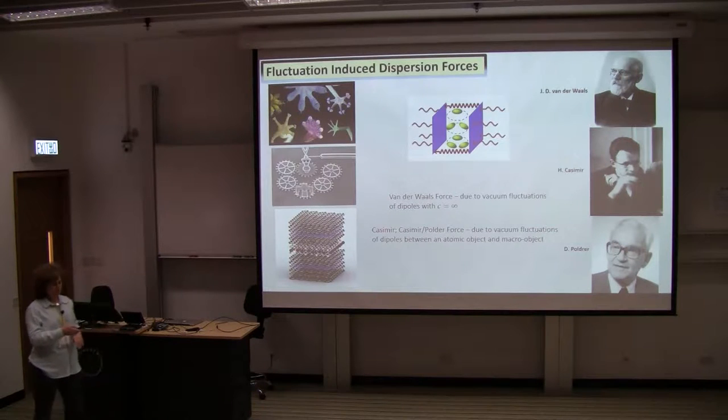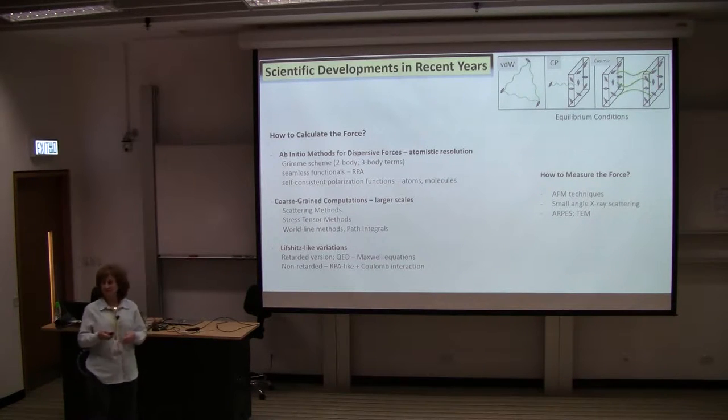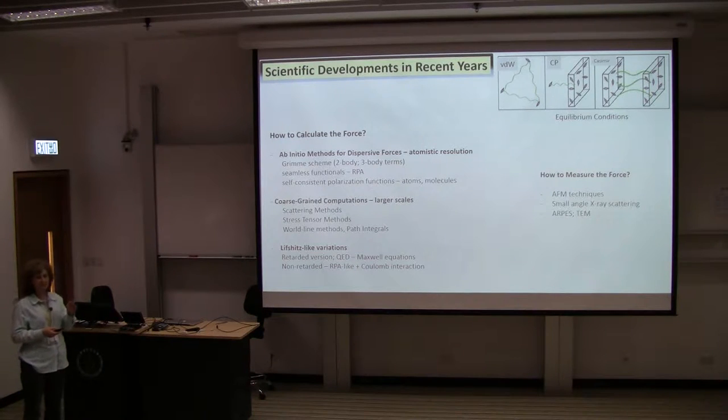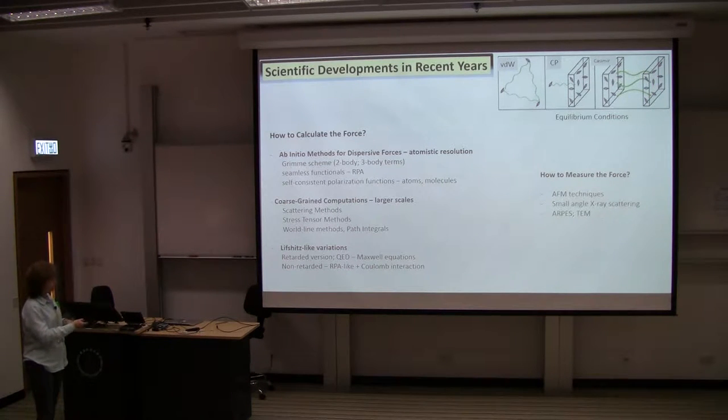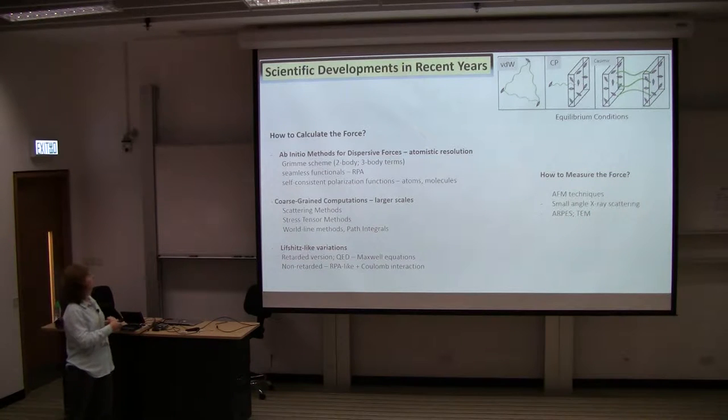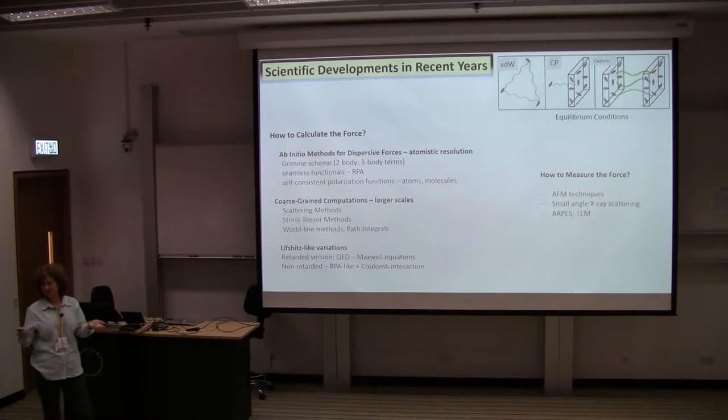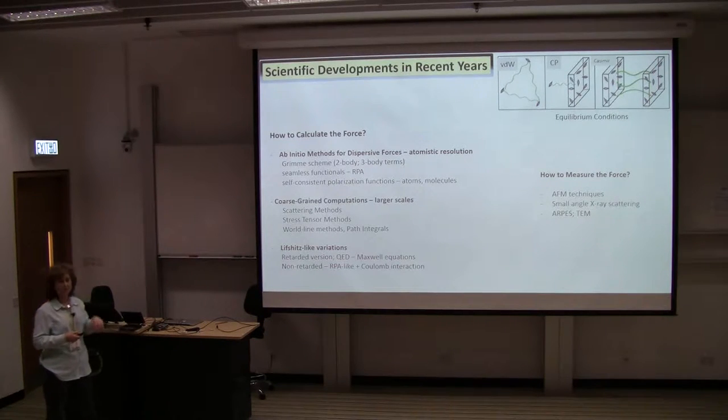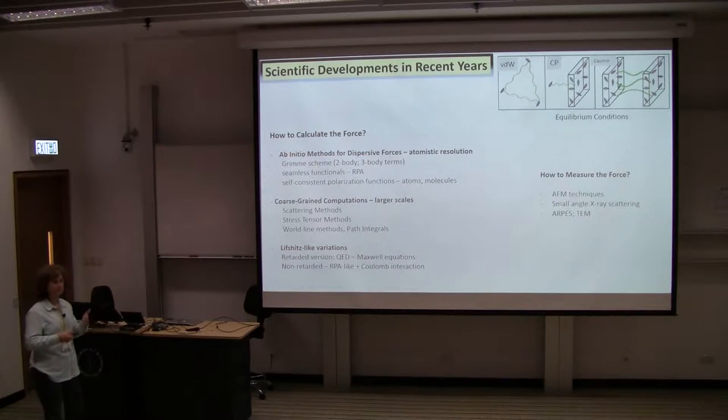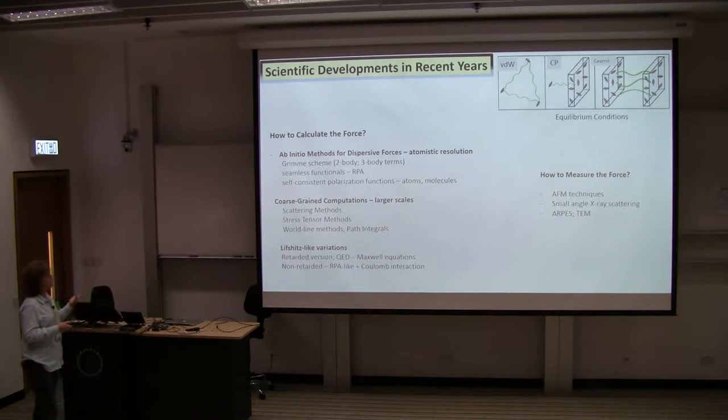Scientific development in the past years has been focused on two main questions: how to accurately compute the force, and how accurately to measure it. The computation can be split into different regimes. At the atomic scale, there has been significant advances in the ab initio methods. Some of the main developers in this area are actually in this room. We can identify two-body, three-body terms, phenomenological additions to density functional theory, and also the RPA scheme. There's also self-consistent polarization functions method for atomic and molecular systems.